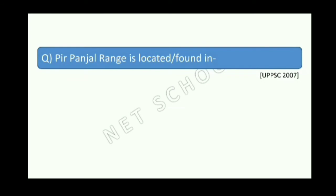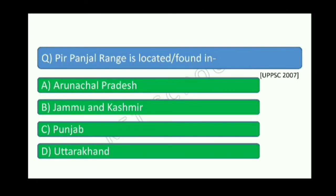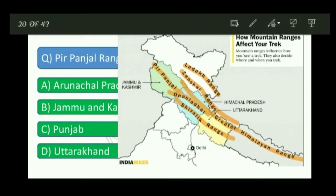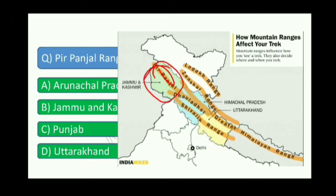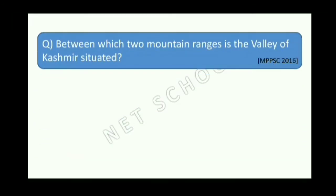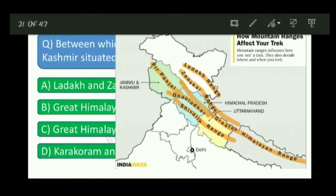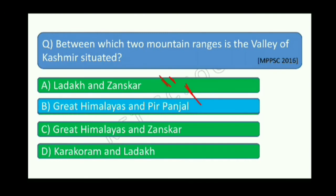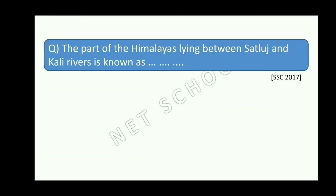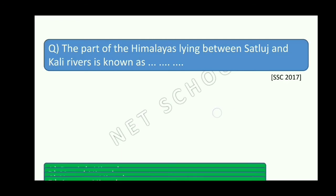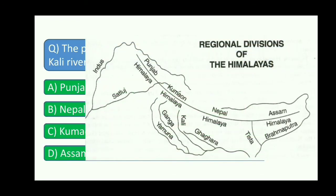The Pir Panjal range is located in the Lesser Himalayas. Between which two mountain ranges is the Valley of Kashmir? The Valley of Kashmir lies between the Pir Panjal and the Greater Himalayan range. The part of the Himalayas lying between the Sutlej and the Kali River is known as the Kumaon Himalayas.